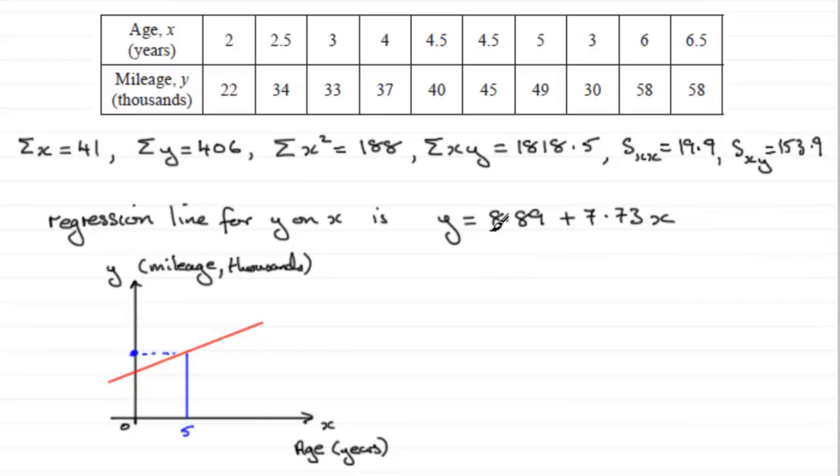And so we just need to substitute 5 into this equation. I would take a little bit more care though, rather than using this equation, I would want to use the unrounded versions of these values, just in case we got a rounded up answer.